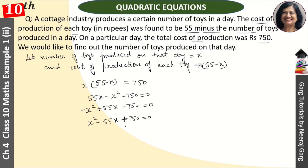Now we can solve this. We need to split it. We need to make the factors of 750 and we need to make the sum of 55.